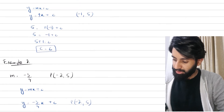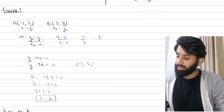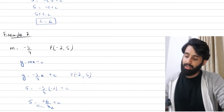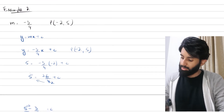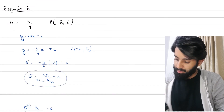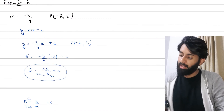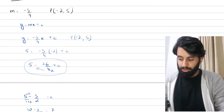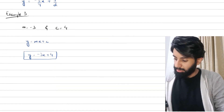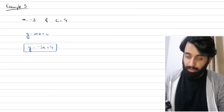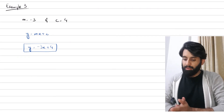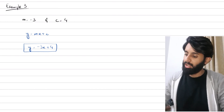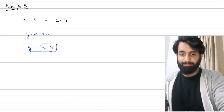Ideally you should have a good grip on the first example — where you're given two points and need to find the equation of the line — and the second, where you're given the gradient and a point. One common error to point out: when finding c, a lot of students tend to cross-multiply before taking the LCM, which is why they get the wrong answer, so be careful. That's about it for this video — let me know what else you want to see. There are other pending videos I'll be making soon. Take care, bye!